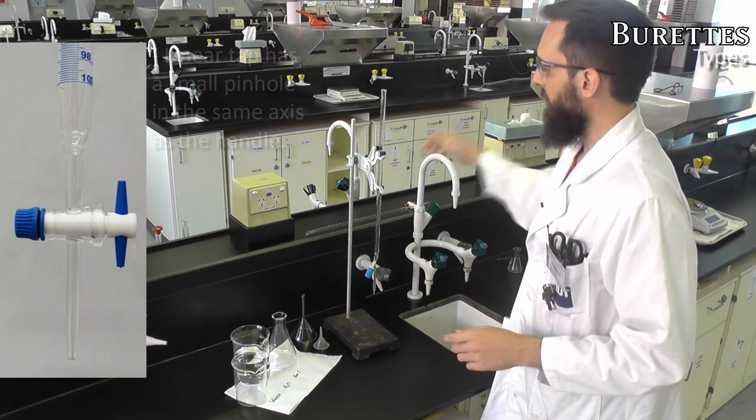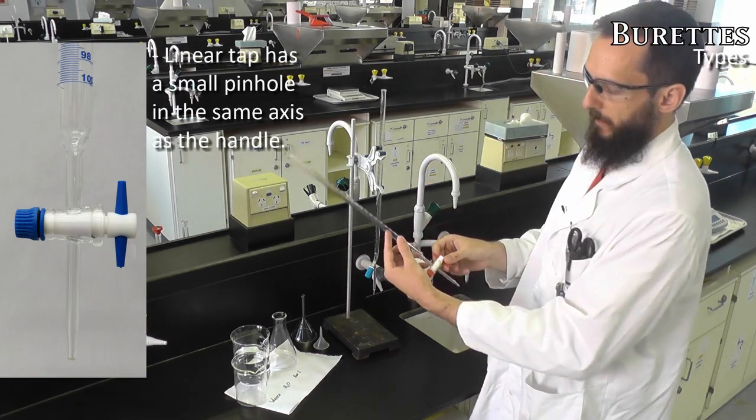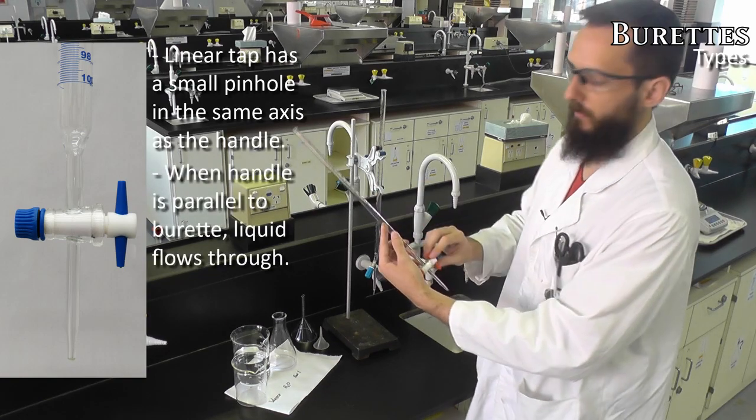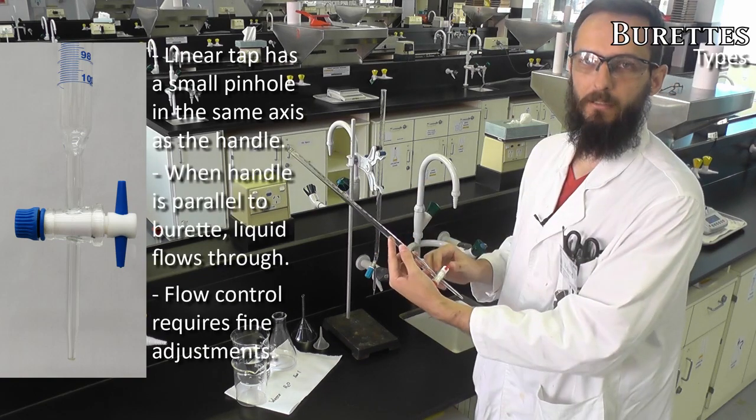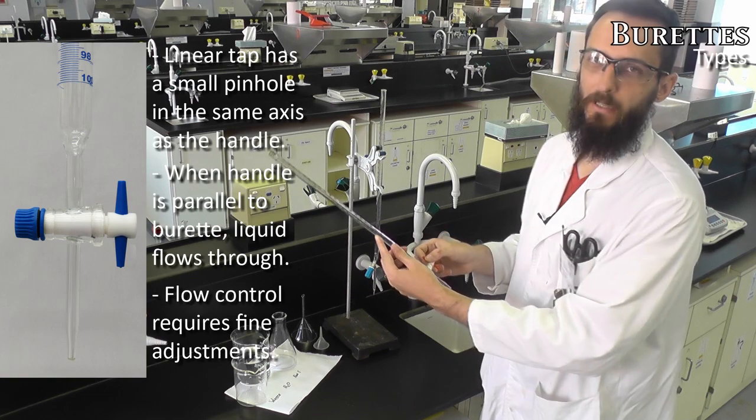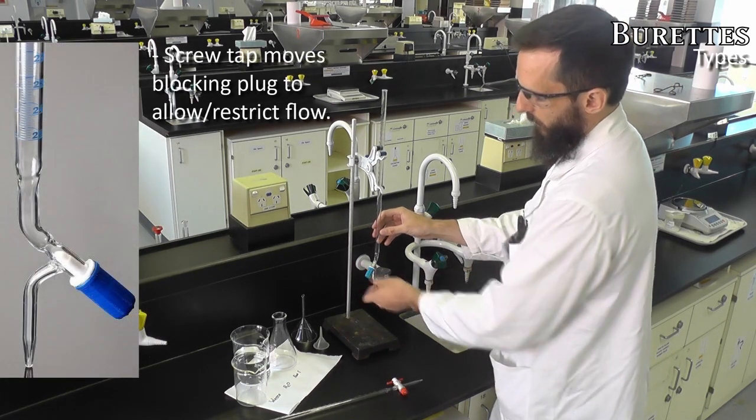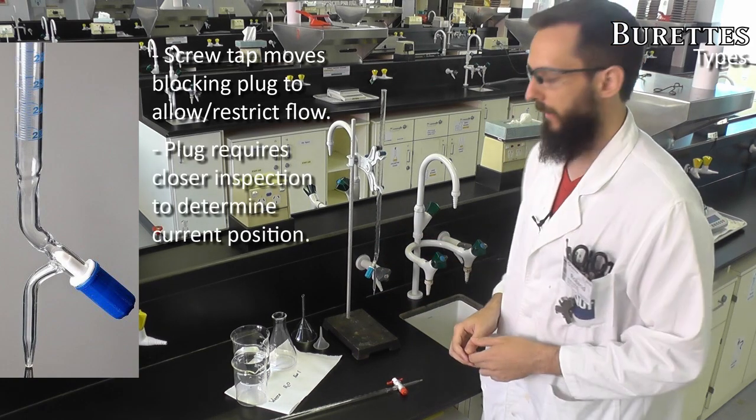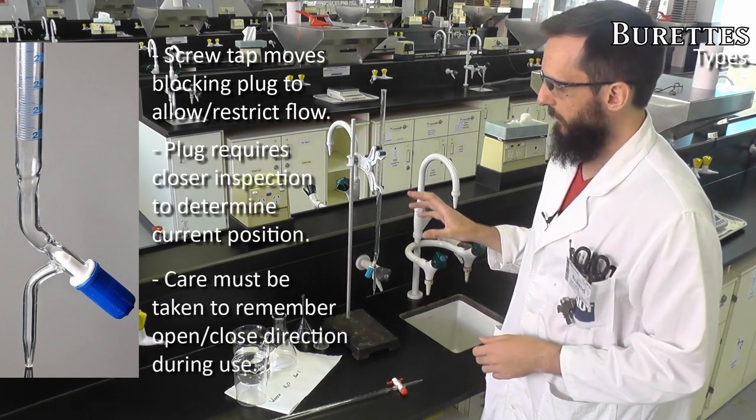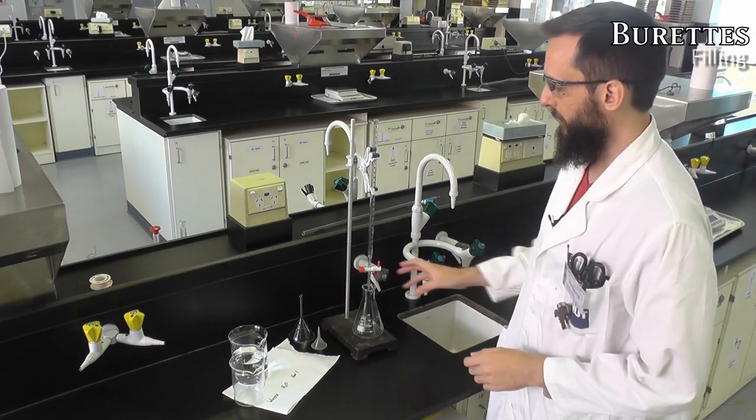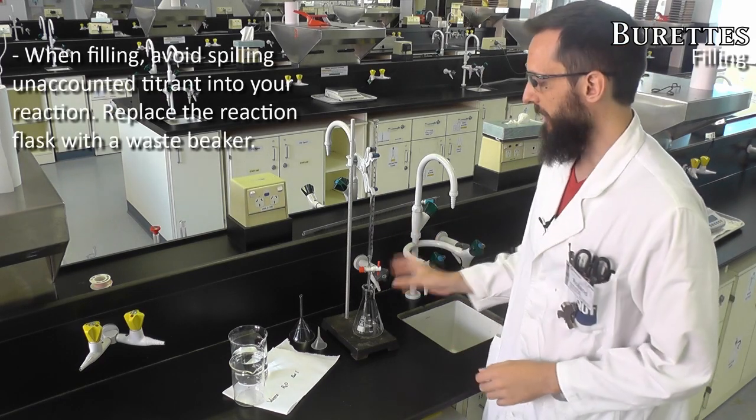We have two types of burettes that we use here commonly in the lab. The first has this tap handle that when in parallel with the burette lets the liquid flow through, and when perpendicular stops the liquid, in between adjust the flow rate. The second type is a simple screw tap where loosening it increases the flow rate. It's important to realize that when you have the screw tap it's difficult to see from a glance which position you're in.